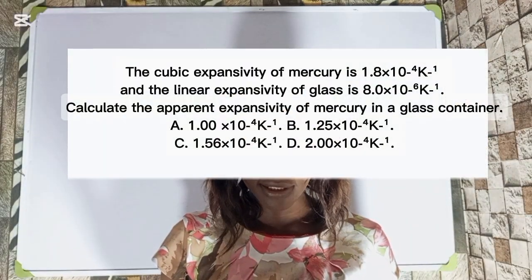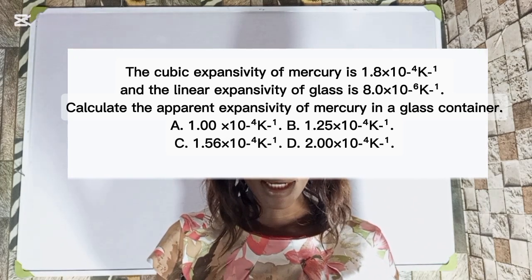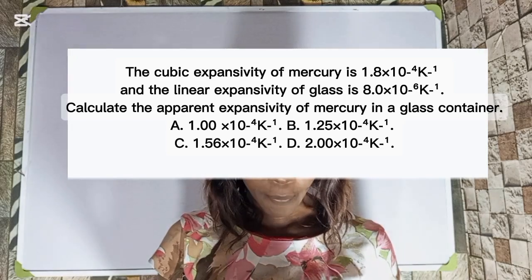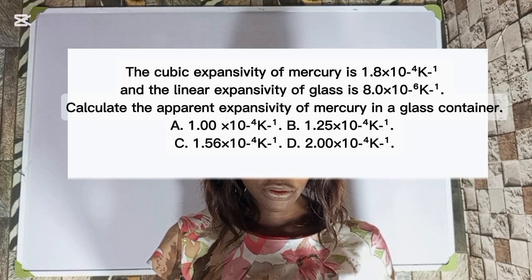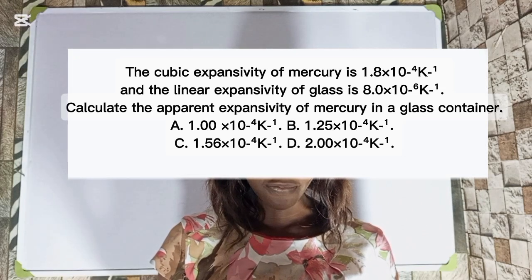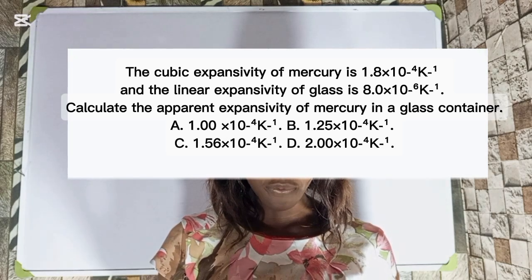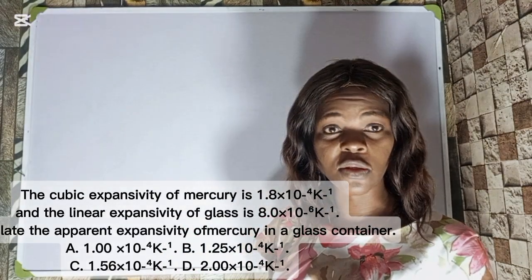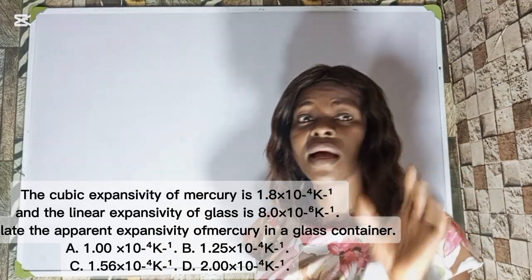The cubic expansivity of mercury is 1.8 × 10⁻⁴ per kelvin and the linear expansivity of glass is 8.0 × 10⁻⁶ per kelvin. Calculate the apparent expansivity of mercury in a glass container. To solve this question, you must know that we have real cubic expansivity and apparent cubic expansivity.